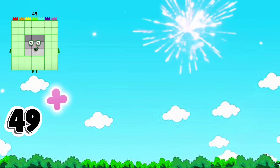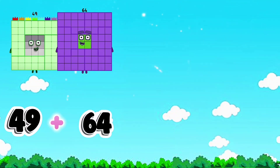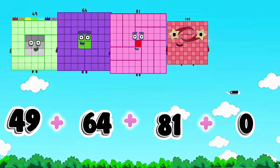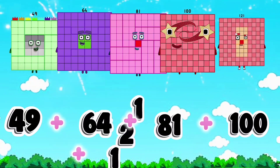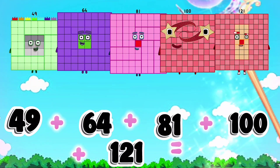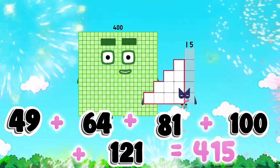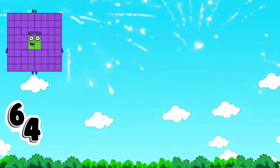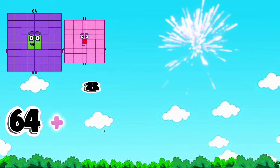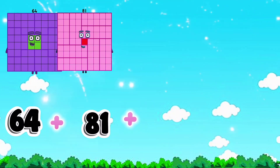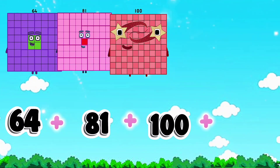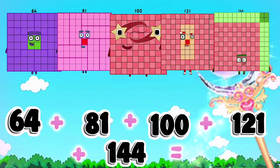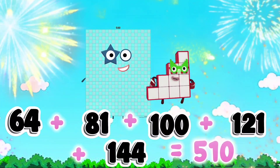49 plus 64 plus 81 plus 100 plus 121 equals 415. 64 plus 81 plus 100 plus 121 plus 144 equals 510.